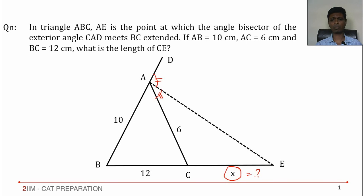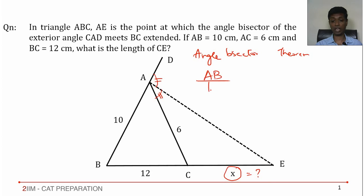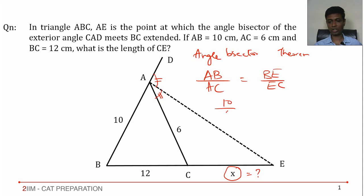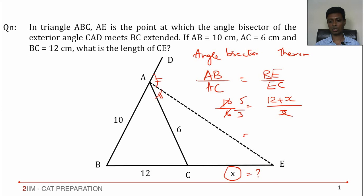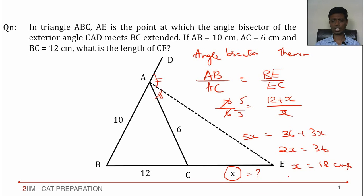The moment you hear angle bisector, think angle bisector theorem. That gives us AB/AC = BE/EC. So 10/6 = (12 + x)/x. Simplifying, 5/3 gives 5x = 36 + 3x, so 2x = 36, x = 18 centimeters. A direct application of the angle bisector theorem for the external angle: AB/AC = BE/EC. Plug it in and we're through.